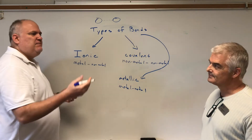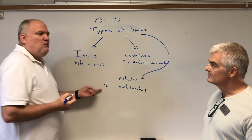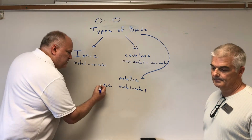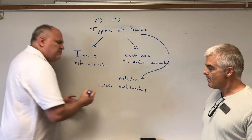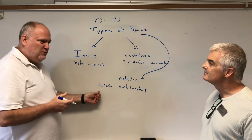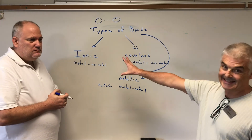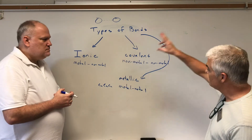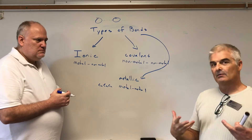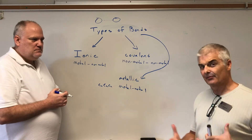If you take a piece of copper, it's not one single copper atom - there are trillions and trillions of them all smushed together. So when we talk about metallic bonding, it's really a metal with more of its own kind. So the key thing to understand: we've got metal/non-metal, non-metal/non-metal, and metal/metal.